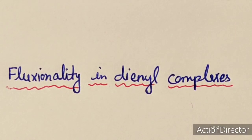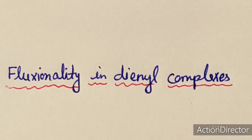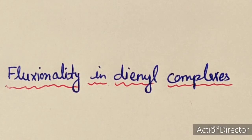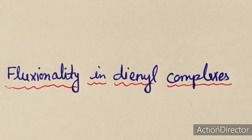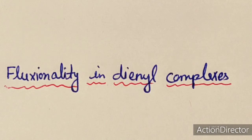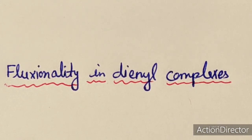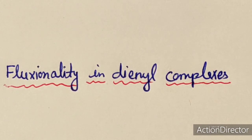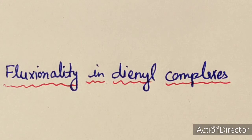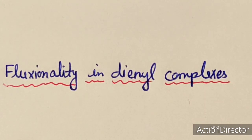In this lecture, we will discuss the fluxional behavior of dienyl complexes. In the previous lecture, we discussed fluxionality in η3-allyl complexes. Now we will discuss fluxionality in complexes having dienyl ligands, taking examples of cyclopentadienyl complexes, where the cyclopentadienyl can act as both η1 and η5 ligands.